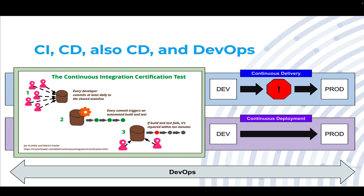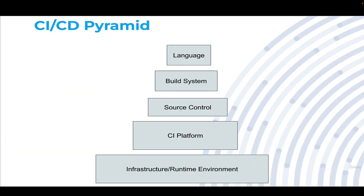The advantage of this is it directly incentivizes the team to do high-quality work, because after all, if the system goes down, they're the ones getting the phone call at 3 o'clock in the morning. Making sense out of all the tools and technologies requires building what I like to refer to as a CI and CD pyramid.